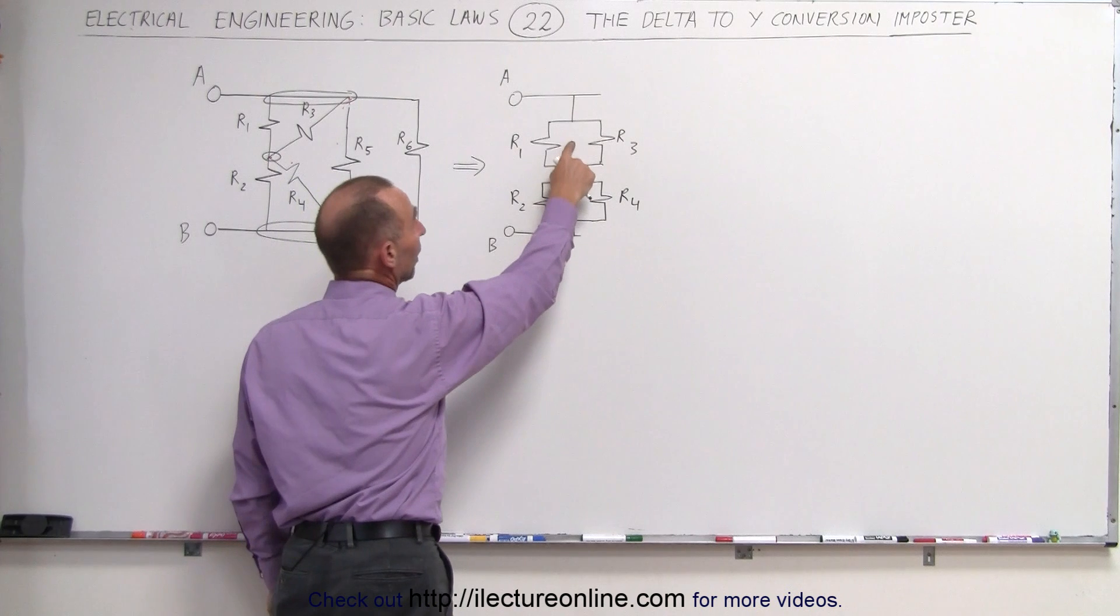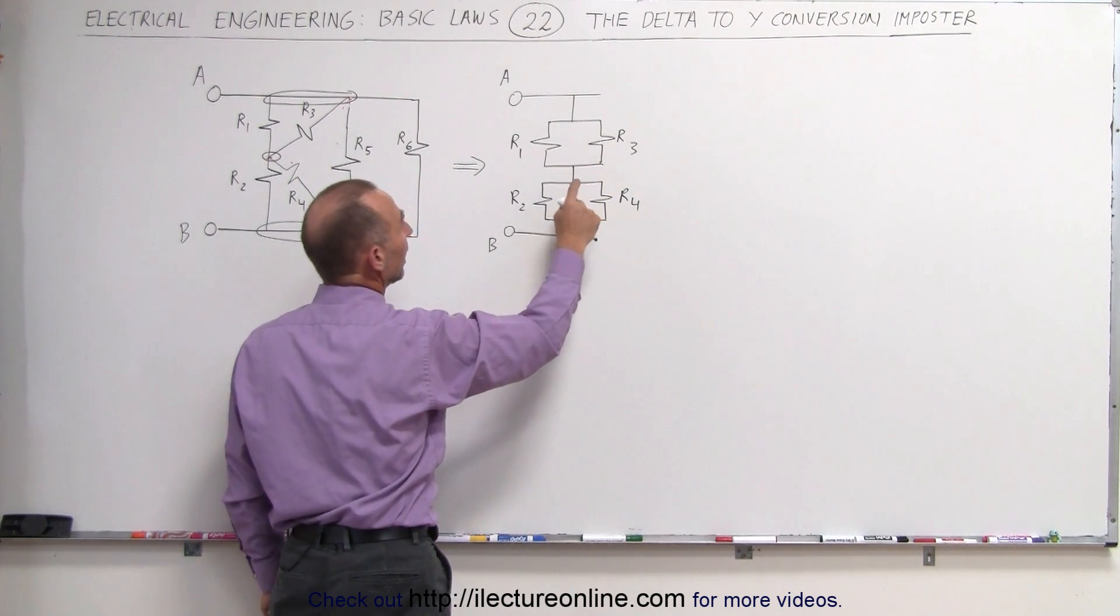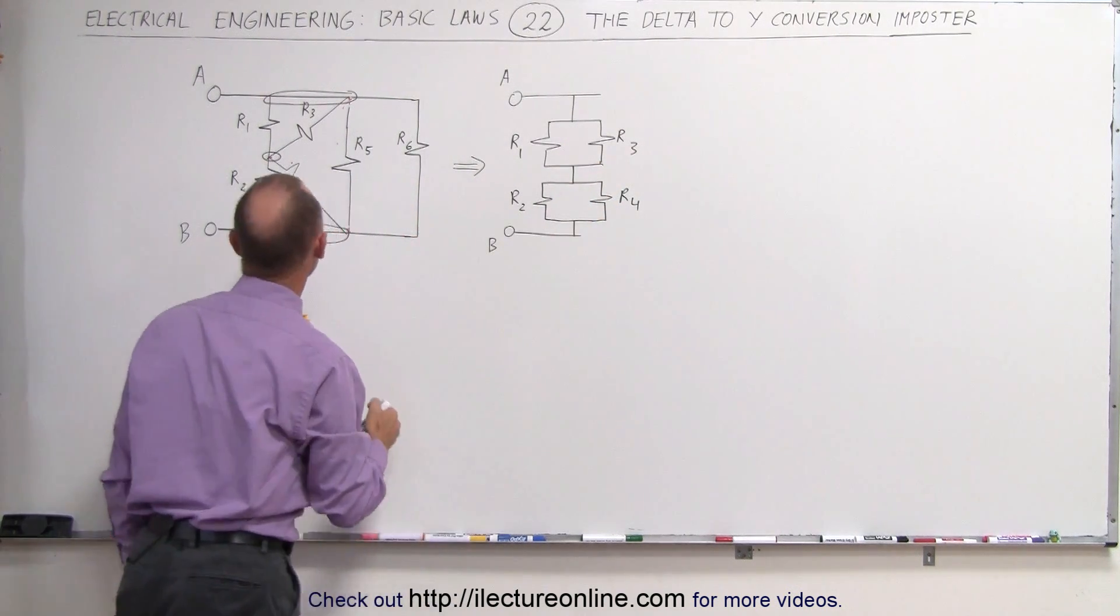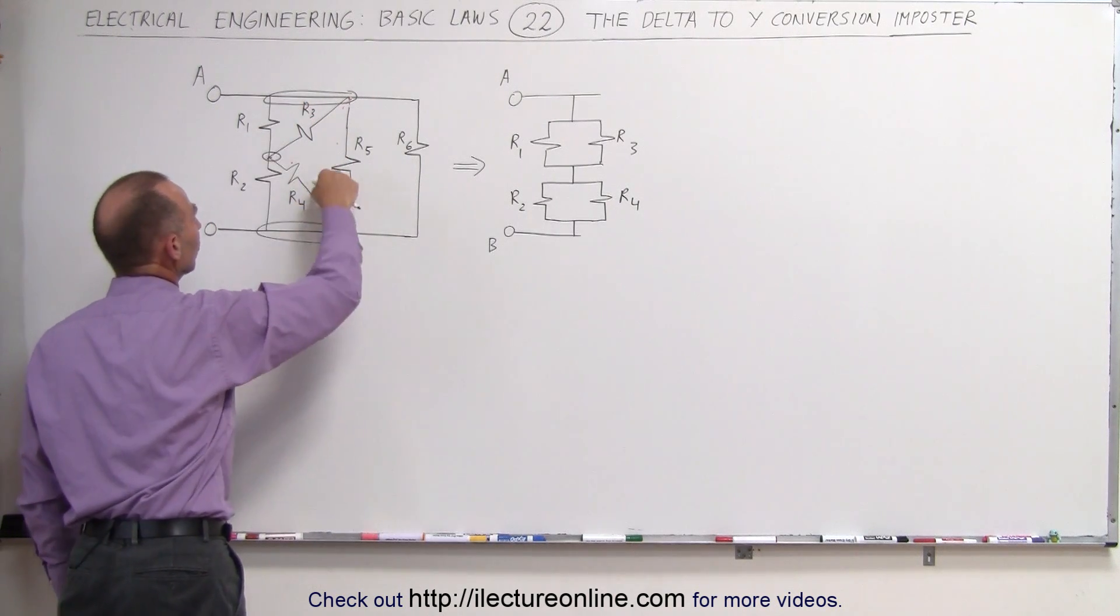We can simply say this is the product over the sum for R1 and R3, and this is the product over the sum for R2 and R4. That takes care of these four resistors.